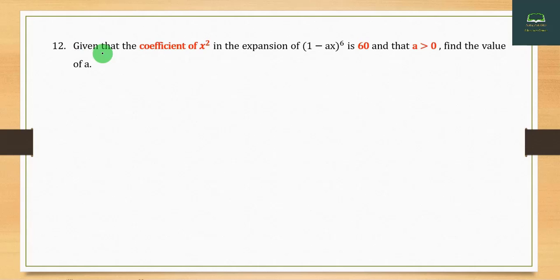Problem 12: Given that the coefficient of x⁵ in the expansion of (1 - xy)⁶ is 60 and that a > 0, find the value of a.